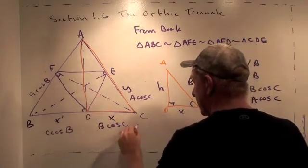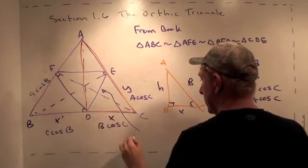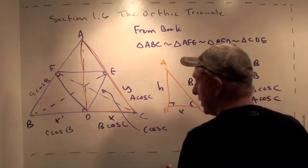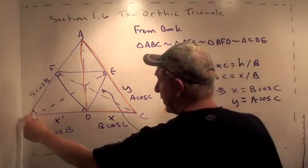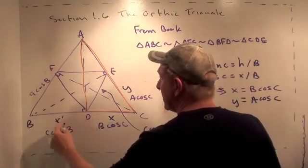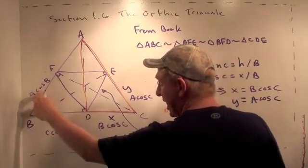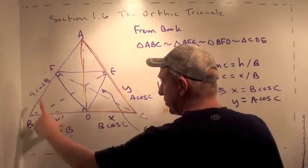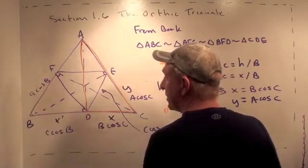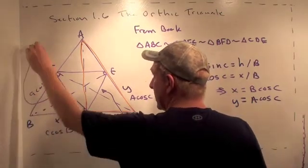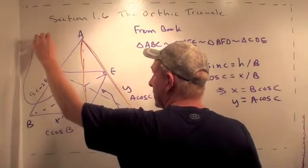And that tells me that this side here is actually equal to C cosine C. Similarly, in triangle BFD, I have the same angle as in ABC and sides A and C that are in proportion, with the proportion being cosine B. So this side here is actually just equal to B cosine B.